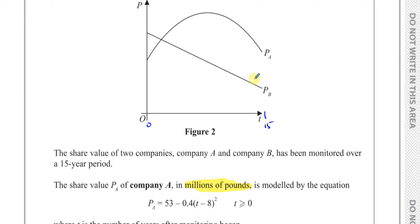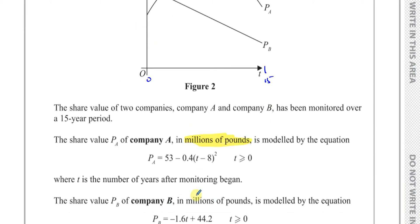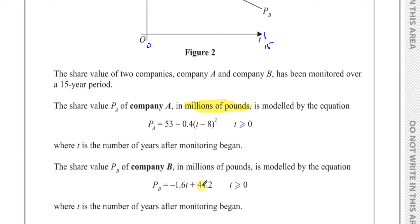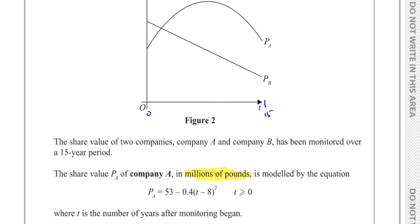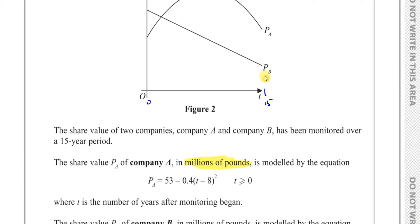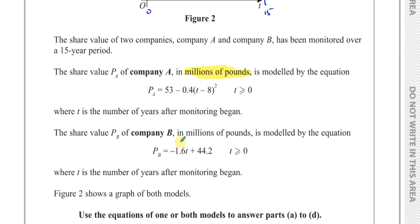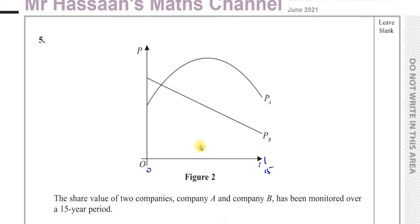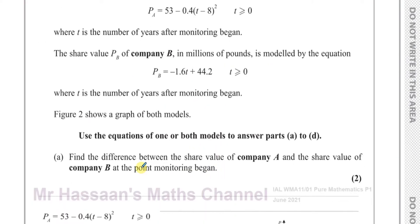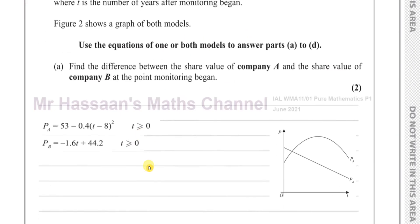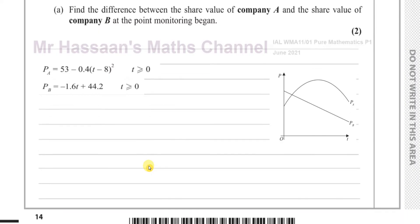Company B is this straight line, which is in the form Y = MX + C, where M is the gradient. We can see it has a negative gradient and C is the Y-intercept. The question says: find the difference between the share value of Company A and the share value of Company B at the point monitoring began.